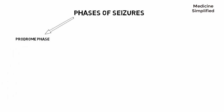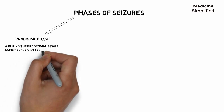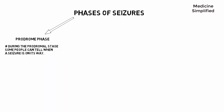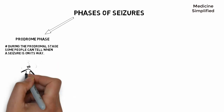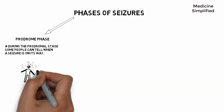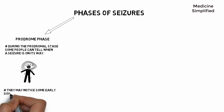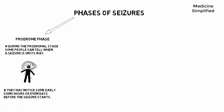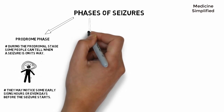The first one is the prodromal phase. During the prodromal stage, some people can tell when a seizure is on its way — they can predict the upcoming seizure. They may notice some early signs hours or even days before the seizure starts.